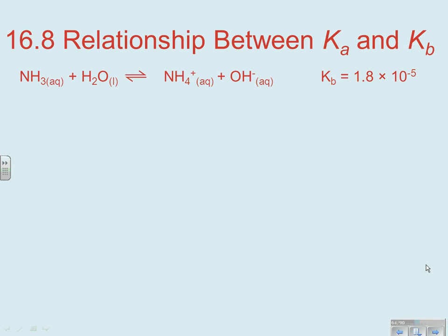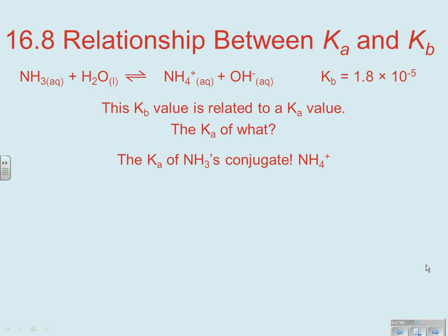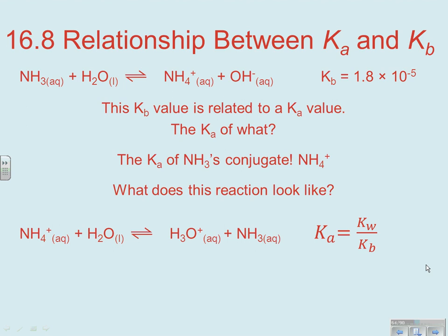Now, one of the things you need to understand about this relationship is that if you take a look at this reaction, I see OH- on the product side, so I know I'm talking about a base reaction. So I know my K value would be a KB in that particular case. So for this particular reaction between ammonia and water, KB is 1.8 times 10 to the negative 5th. Now, this KB is related to a KA value. We just talked about that on the previous slide. The question is, the KA of what? Well, what it's related to is its conjugate. So the KA of NH3 is basically NH3's conjugate, NH4+. So in this particular case, the reaction of NH4+ thrown into water would look like this. So NH4+ is the conjugate of our base, NH3.